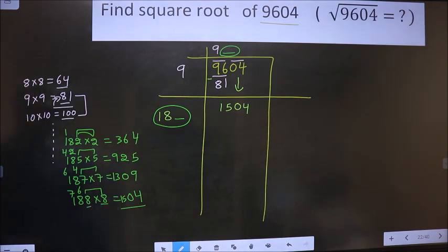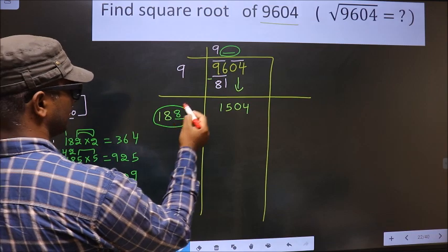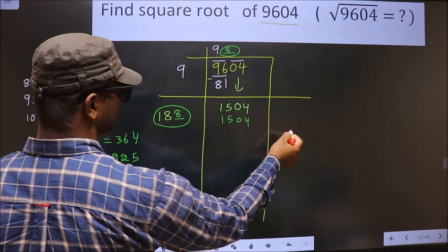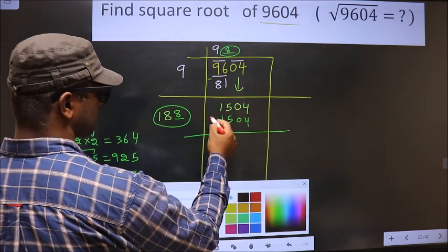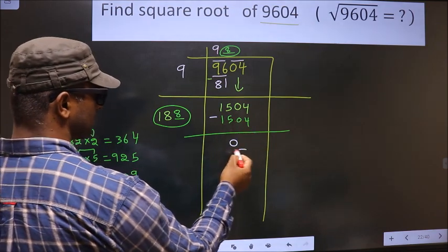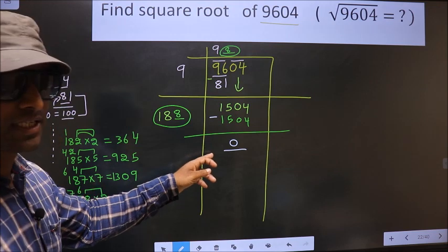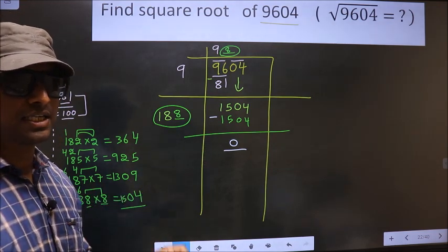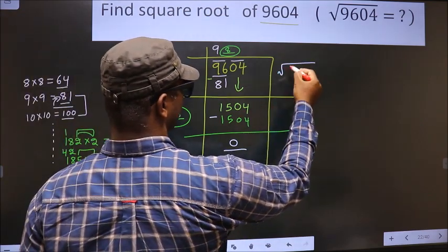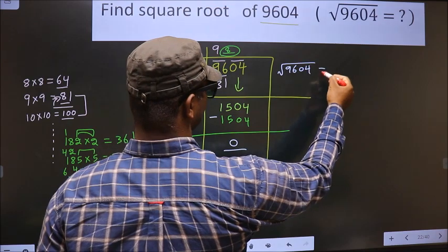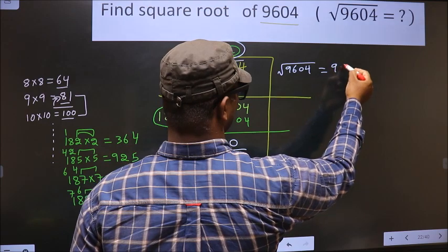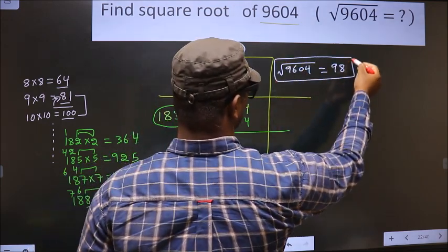For the number 8, you write 8 here and here also 8, and here 1504. Now you subtract: 1504 minus 1504 is 0. We got 0 here, which means the given number is a perfect square, and the square root of 9604 is this number, that is 98. So this is our answer.